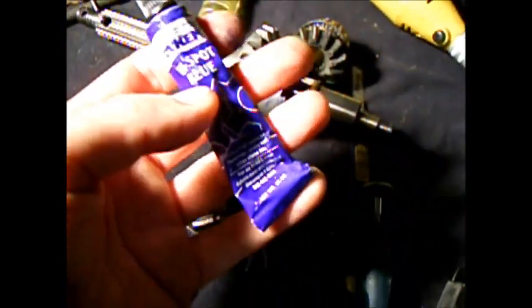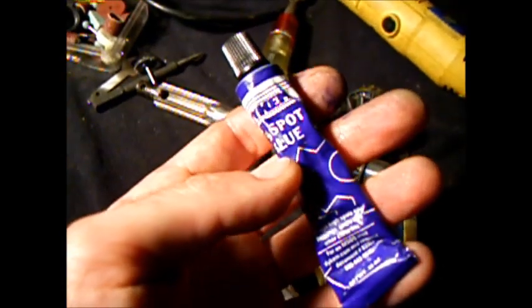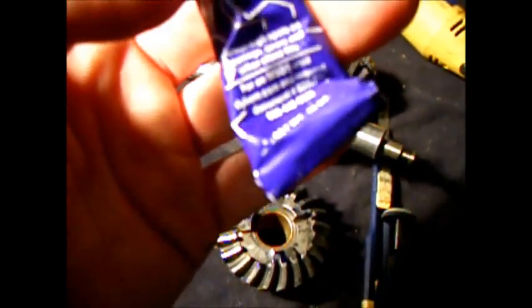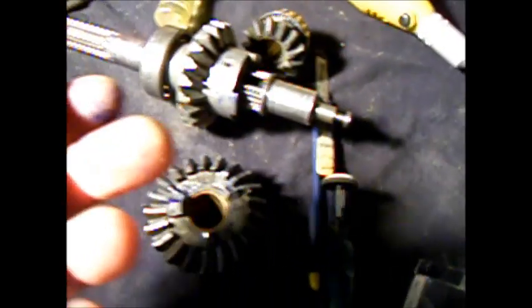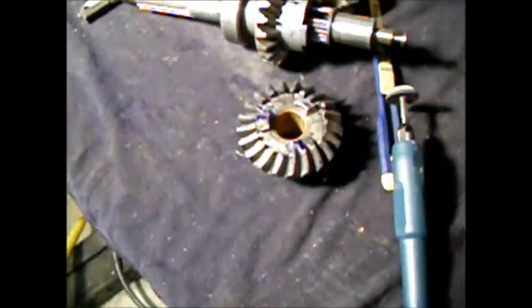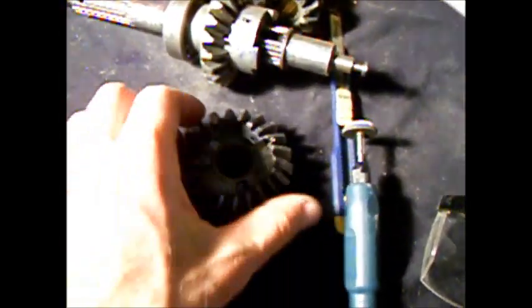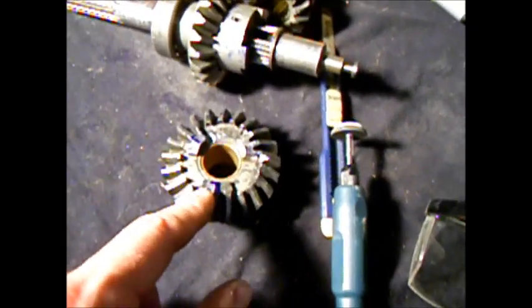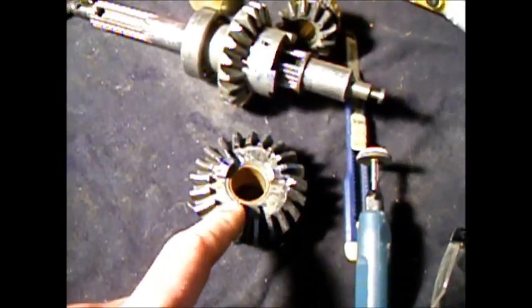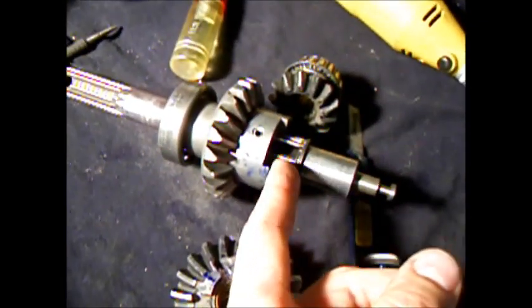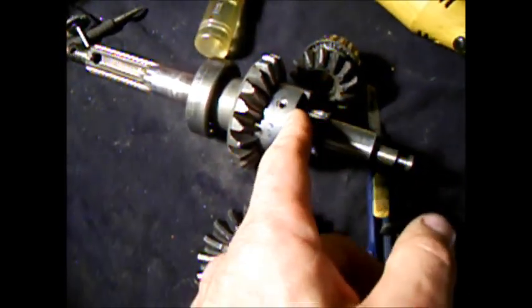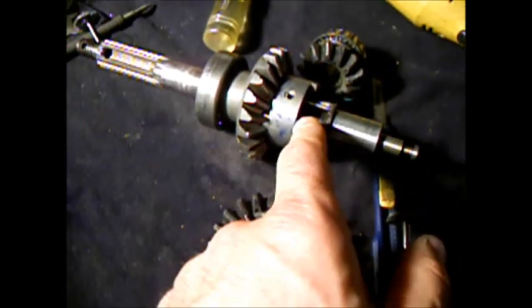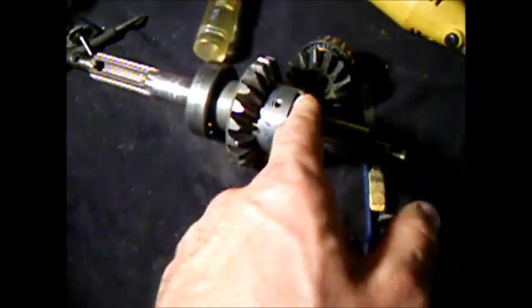You take this stuff and this is called the High Spot Blue made by Dykem, D-Y-K-E-M, and it detects high spots and bearings, gears, and other close fits. And what you do, it's blue, it looks like ink, and you should wear gloves because when you get it on your fingers it doesn't want to come off. You dab it on one of these teeth right here and then you put it on and you rotate it against each of the three teeth on the clutch dog.